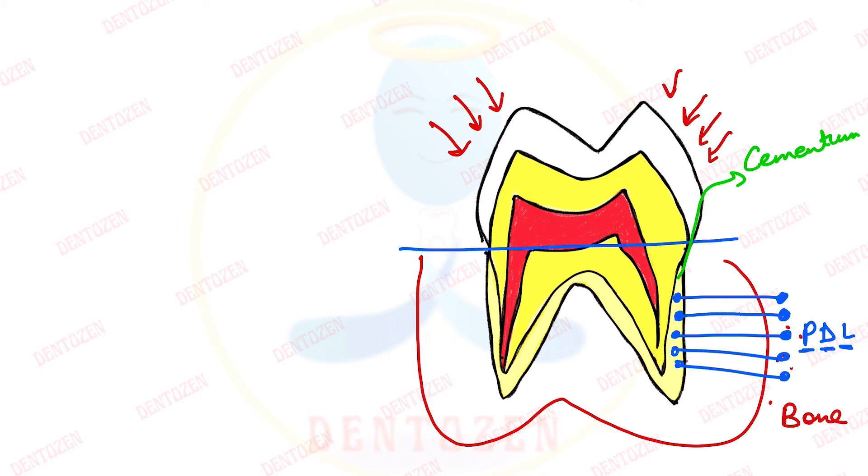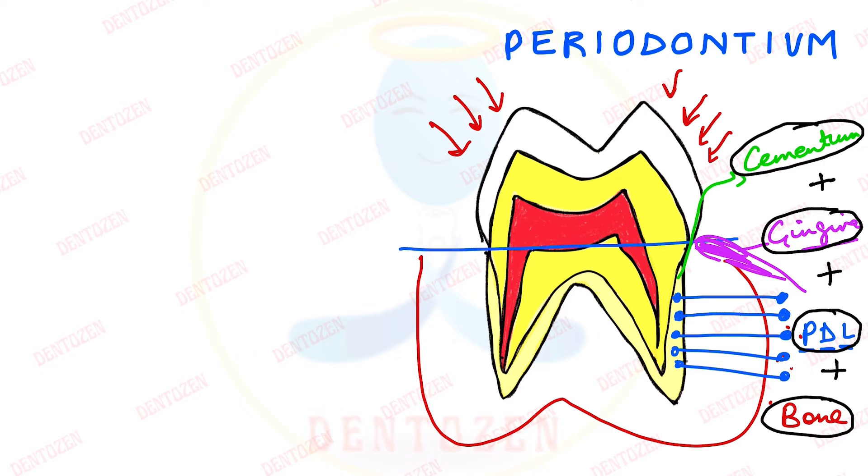And on the outside, all these are surrounded by a soft tissue which is known as gingiva or gums. So here we can see these four tissues, out of which we have two hard tissues, that is cementum and bone, and two soft tissues, gingiva and periodontal ligament. So together all these four tissues support the tooth and keep it fixed in the mouth so they do not dance and they help us eat our food.